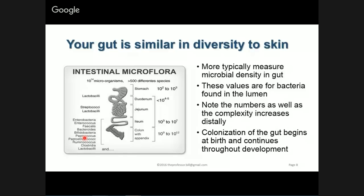Do you have any questions on this before we go on? The numbers on the right are not important. What matters is the increasing trend, and being aware of the small intestinal divisions — duodenum, jejunum, and ileum — and the large intestine labeled as the colon. You don't have to memorize all the bacterial names shown at the bottom.